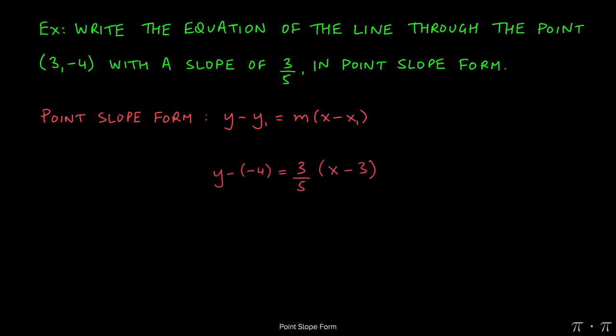So all we do is just plug the numbers in where they belong. y minus the y-coordinate, which is negative 4, m gets replaced with 3 over 5, that's what we were given for the slope, times the quantity x minus x1, which happens to be 3.